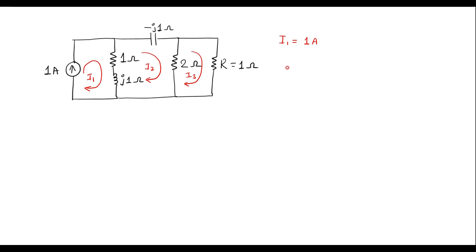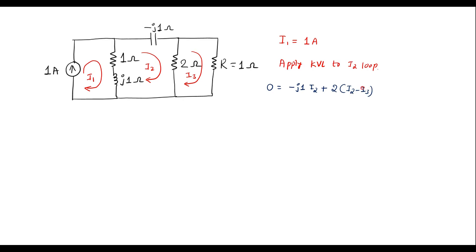Now let me apply KVL — Kirchhoff's Voltage Law — to the I2 loop. There are no voltage sources, so: 0 equals voltage across the j1 ohm element, which is minus j1·I2, plus voltage across the 2 ohm resistor where I3 is also flowing, which is 2(I2 minus I3), plus voltage across the (1 + j1) element, which is (1 + j1)(I2 minus I1), since I1 flows in the opposite direction.